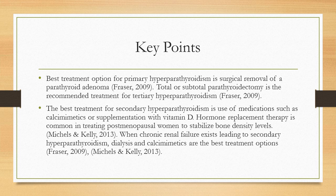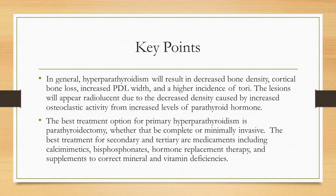The best treatment for secondary hyperparathyroidism is the use of medications such as calcium emetics or supplementation with vitamin D. Hormone replacement therapy is common in treating postmenopausal women to stabilize bone density levels. When chronic renal failure leads to secondary hyperparathyroidism, dialysis and calcium emetics are the best treatment options. In general, hyperparathyroidism results in decreased bone density, cortical bone loss, increased PDL width, and a higher incidence of mandibular tori. Lesions appear radiolucent due to decreased density from increased osteoclastic activity caused by elevated parathyroid hormone. For secondary and tertiary, the best treatments are medicaments including calcium emetics, bisphosphonates, hormone replacement therapy, and supplements to correct mineral and vitamin deficiencies.